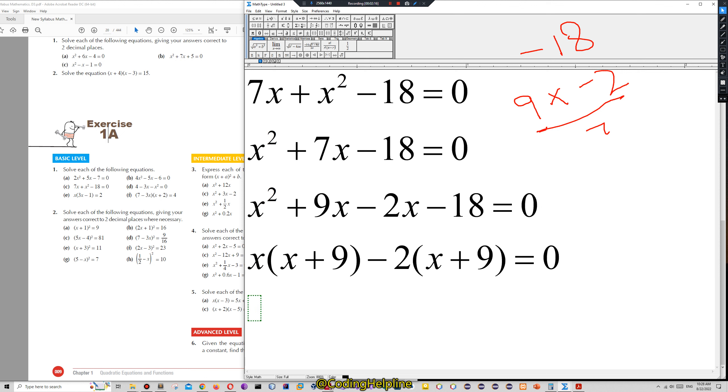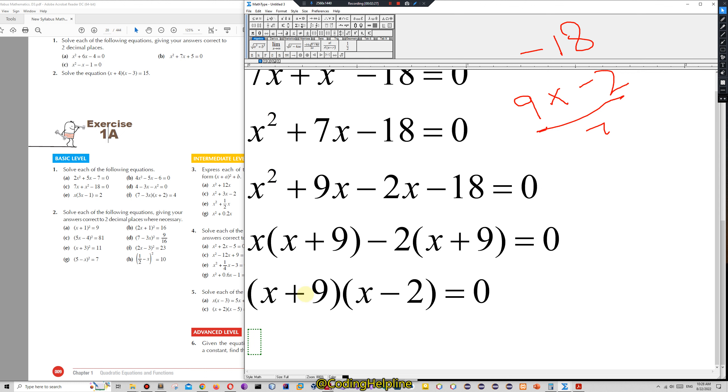Now we will take common terms and factorize. So x is common here, we will be left with x plus 9. Then minus 2 is common here and we're left with x plus 9 is equal to 0.